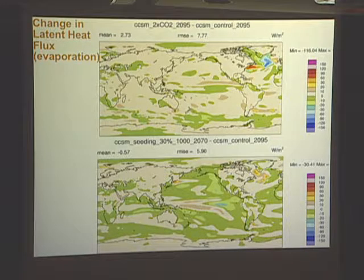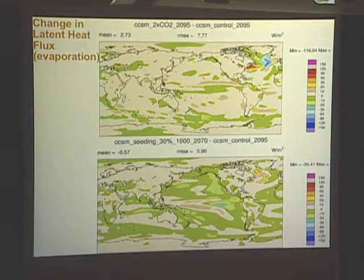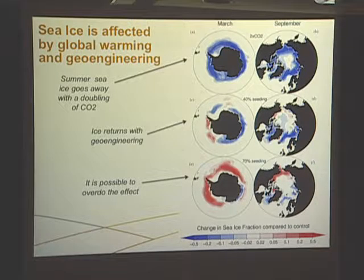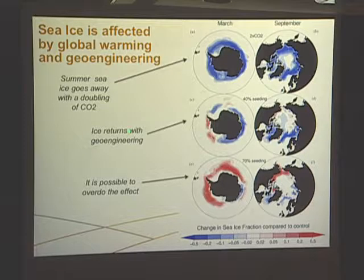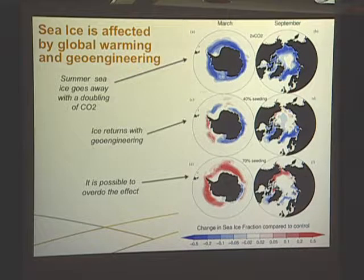There are also changes in the latent heat fluxes associated with evaporation, which are responsible for changes in the precipitation distribution. In spite of the fact that the forcings we're imposing are primarily in the subtropics, the heat transports are global in nature and you see a response in sea ice even though the forcing is imposed primarily in the subtropics. With a doubling of CO2, we see a familiar loss of sea ice, and the sea ice responds with geoengineering — it's actually possible to overdo the effect with additional enhancements.